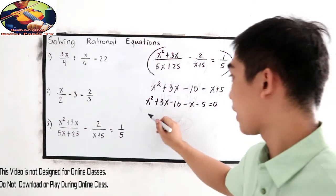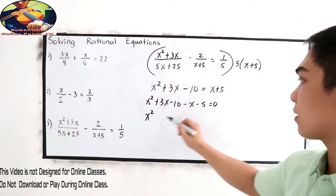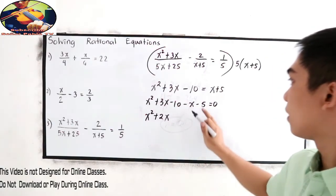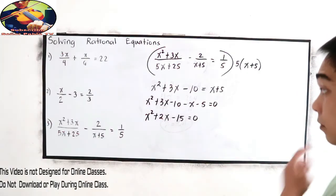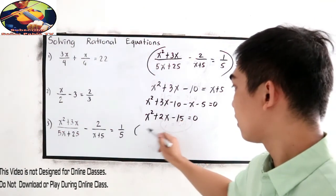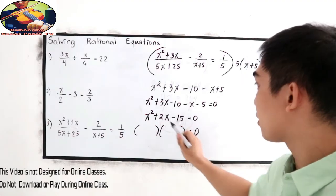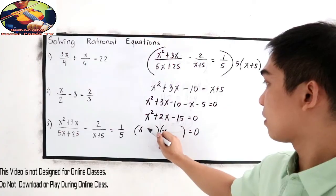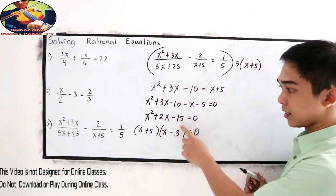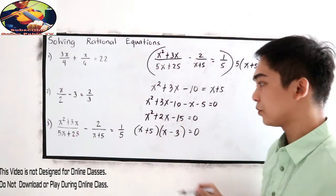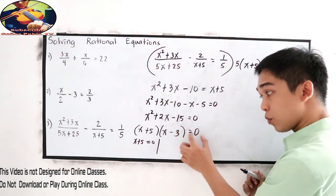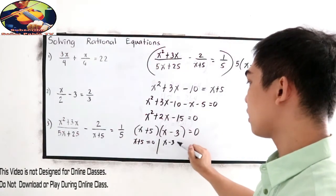Combine like terms. Transpose to the right side: x² plus 3x minus 10, then the positive x becomes negative x and positive 5 becomes negative 5, equals 0. Combine: x² plus 2x minus 15 equals 0. Factor — factors of negative 15 that sum to positive 2 are positive 5 and negative 3, giving (x+5)(x−3) equals 0.